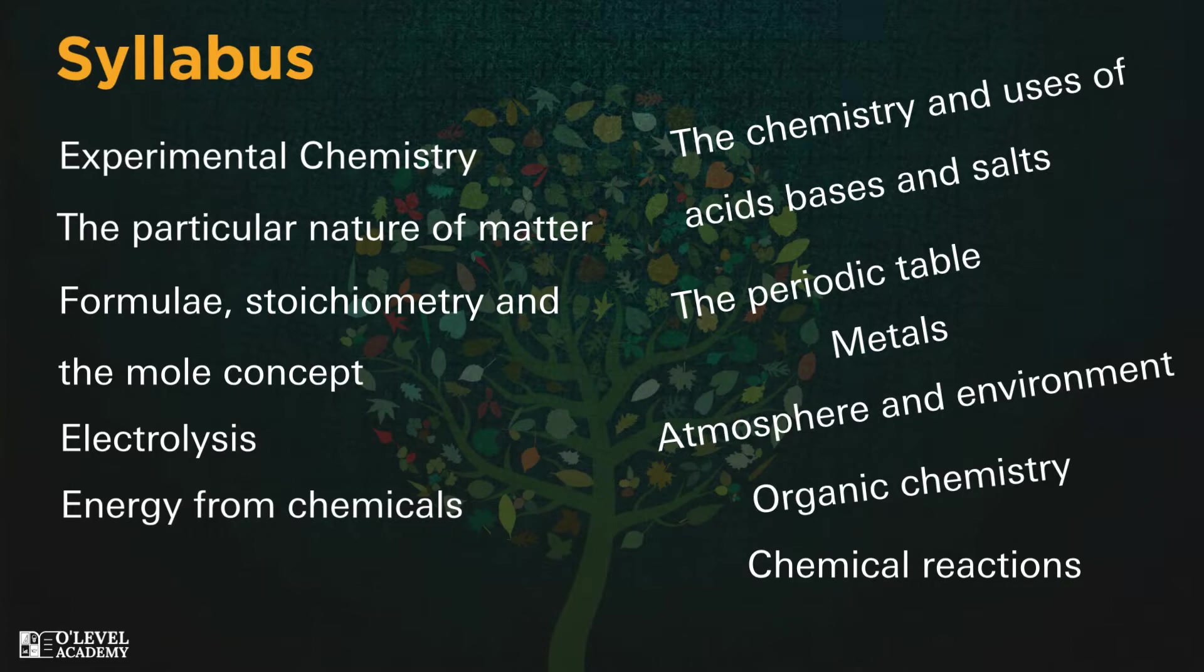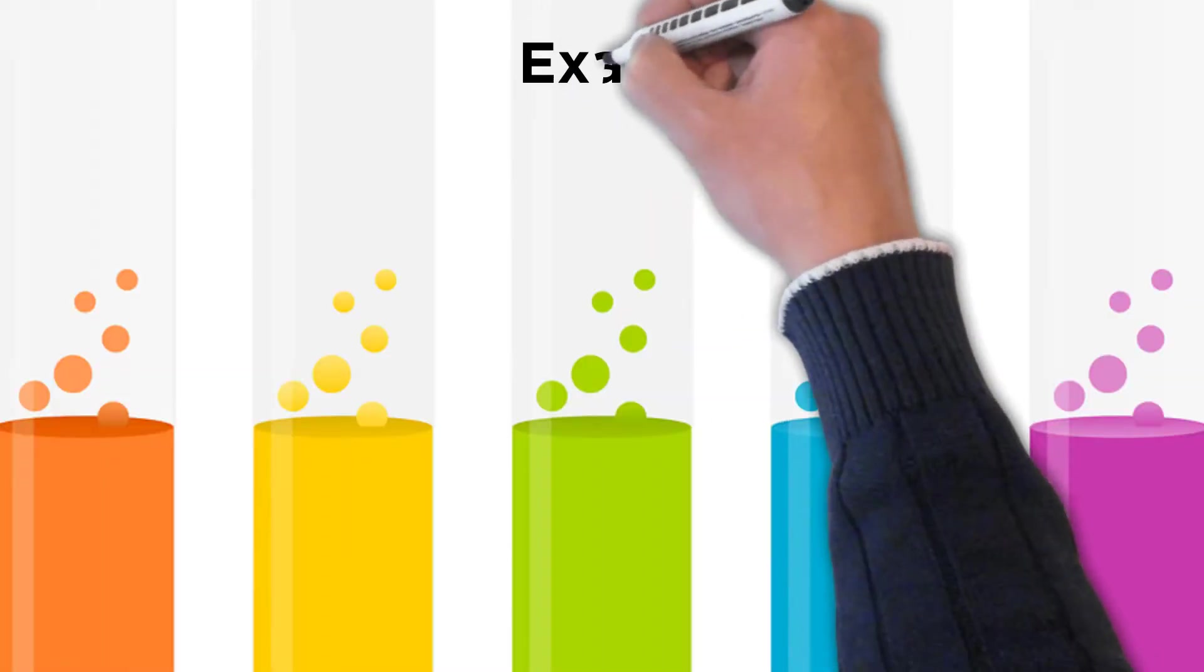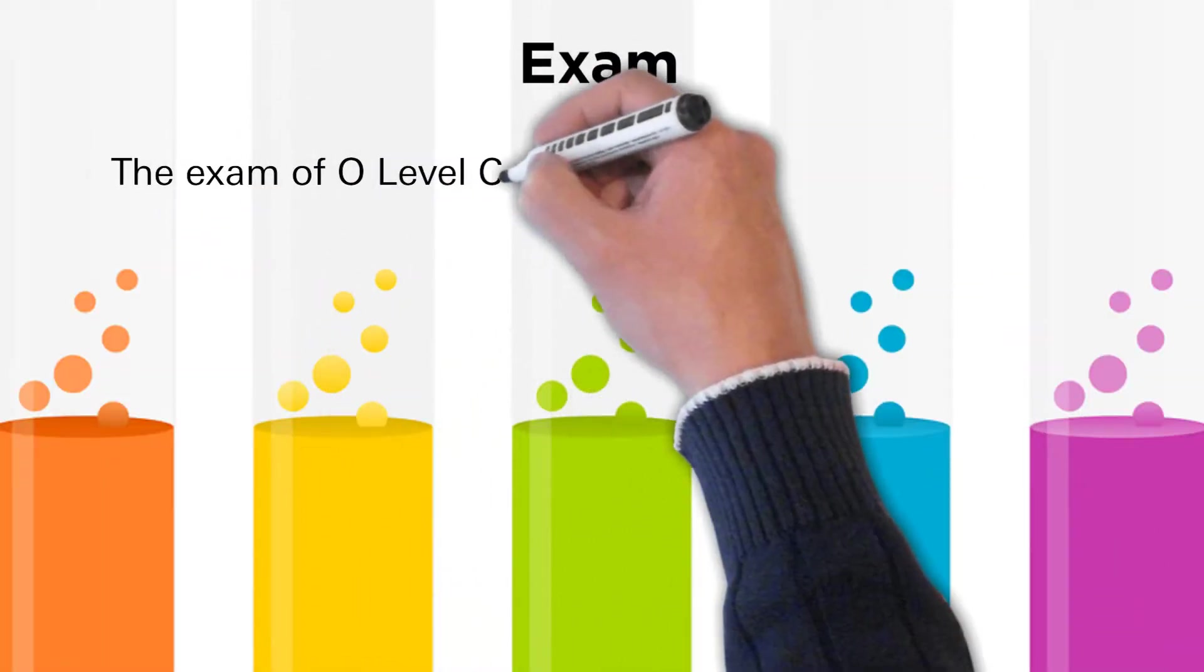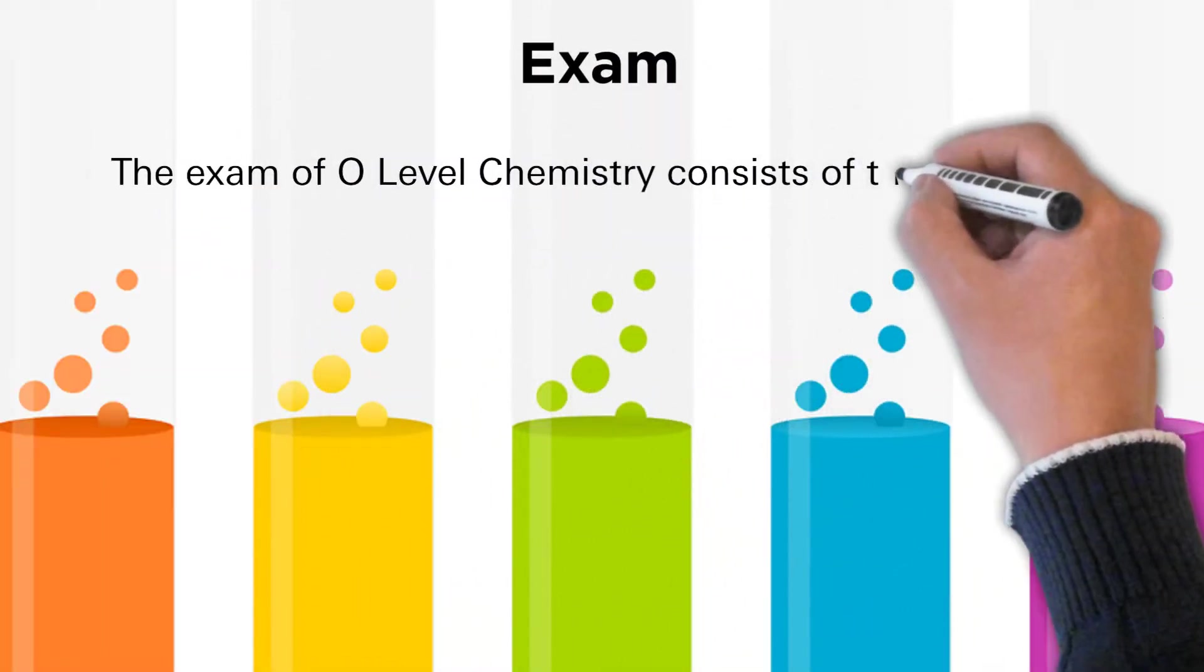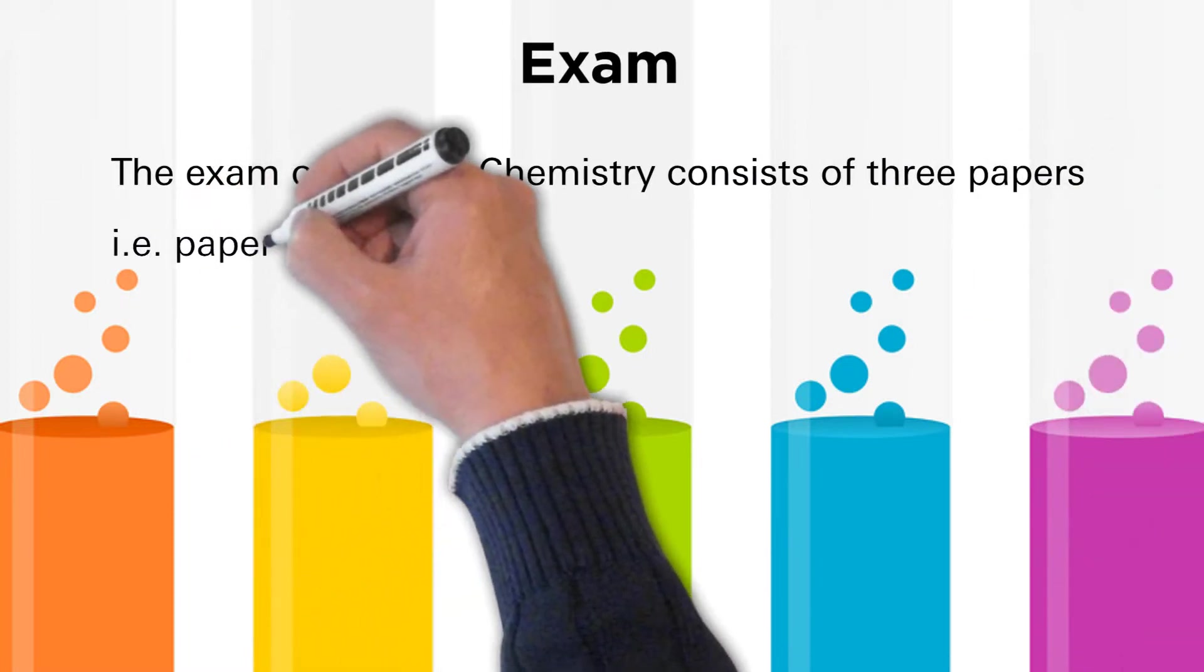Exam: The exam of O-Level Chemistry consists of three papers - that is Paper 1, Paper 2, and Paper 3 or Paper 4.